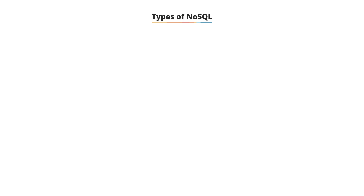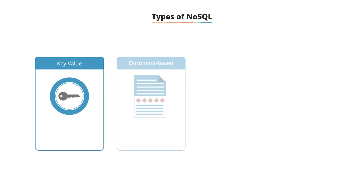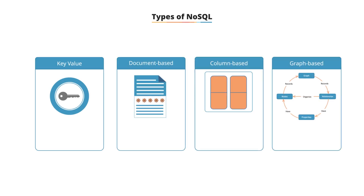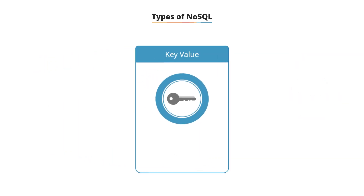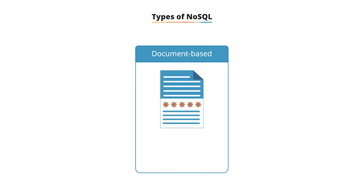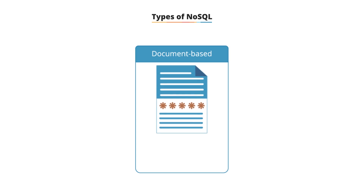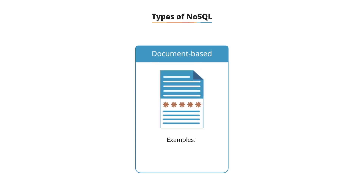Types of NoSQL. There are basically four types of NoSQL databases: key-value, document, column, and graph. The key-value database has a big hash table of keys and values. Oracle's NoSQL, Redis server, and Scalaris are examples of key-value stored databases. Document-based databases store documents made up of tagged elements. Examples include MongoDB, CouchDB, OrientDB, and RavenDB.